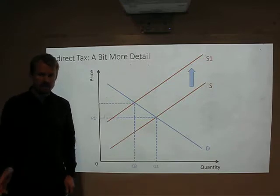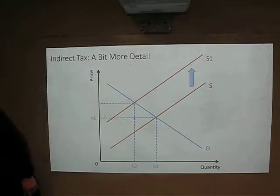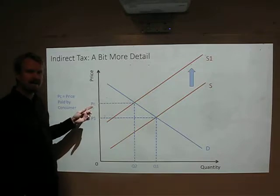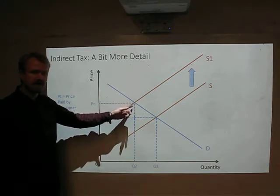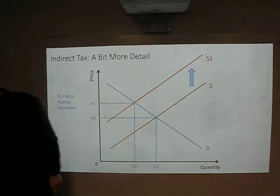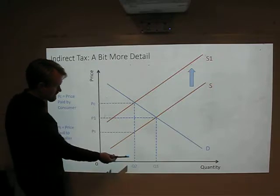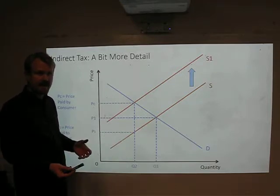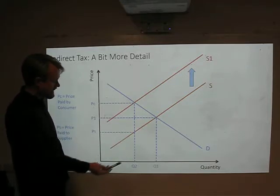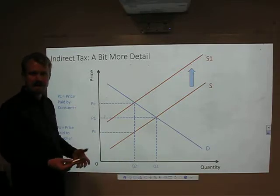This time I'm going to have a look and sort of distinguish what's actually happening at that quantity level. Because we can say that PC is the price paid by the consumer. That's the consumer's price they're paying where the new supply curve meets the demand. However, I'm going to also add in that at this quantity here, the original supply curve is what the suppliers are effectively getting after the tax. And so at quantity 2, this PS is going to be the price paid to the supplier.